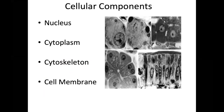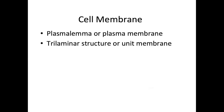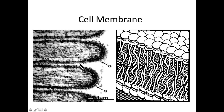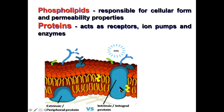Cellular components include the nucleus, cytoplasm, cytoskeleton, and cell membrane. The cell membrane, also called the plasmalemma or plasma membrane, is trilaminar — it has three layers: a bilipid layer with a head and a tail.